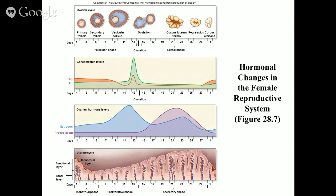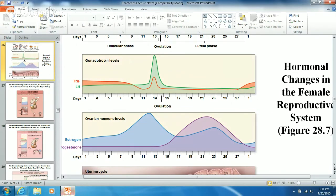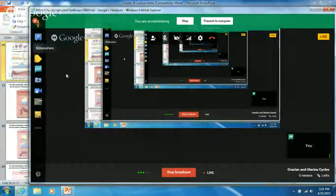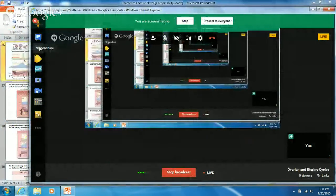All of this is happening concurrently — the same 28 days, different cycles, all relying on one another. And that is the breakdown of the ovarian cycle and the uterine cycle. If you have any questions about what we just talked about, please post a question below or contact me through the site. Looking forward to seeing you soon.